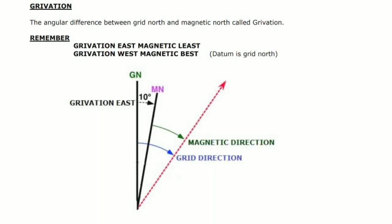We already knew that convergence is the angular difference between grid north and true north. Now the next term is grivation. The angular difference between grid north and magnetic north is called grivation. Remember: grivation east — magnetic is less; grivation west — magnetic is greater. Here grid north is taken as the datum.